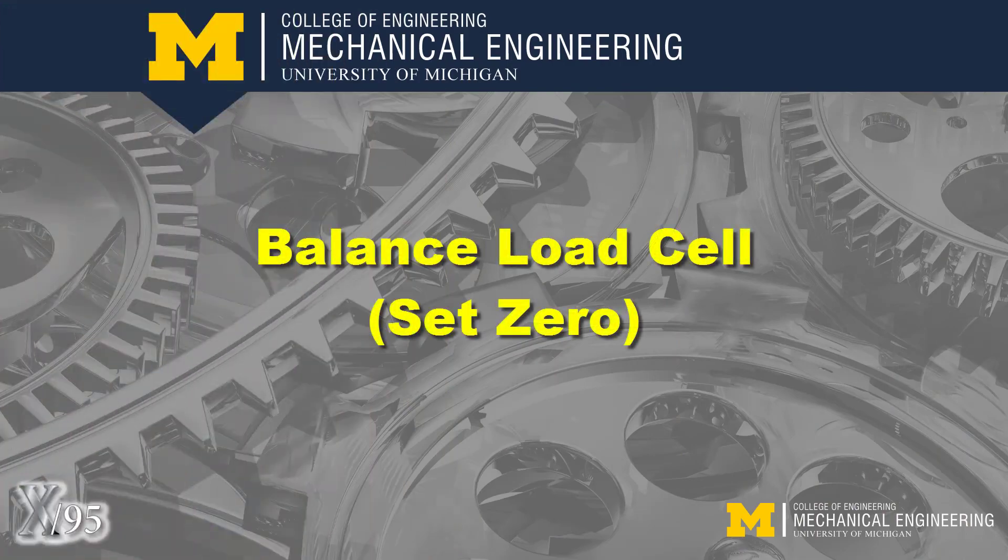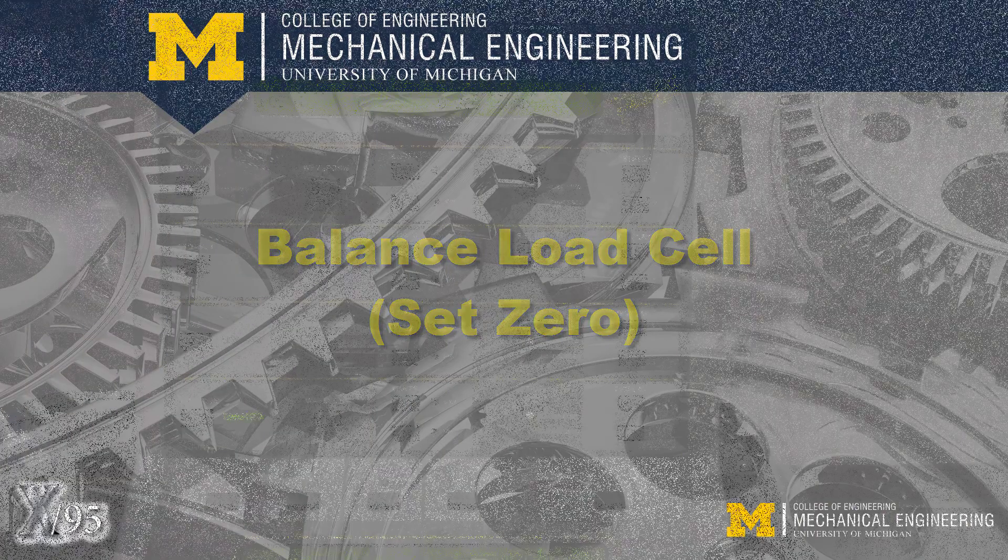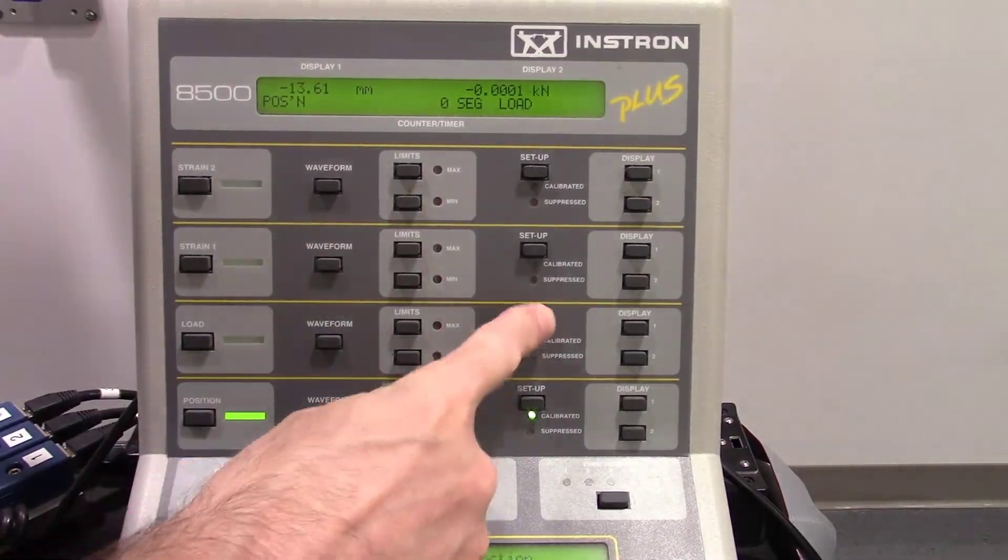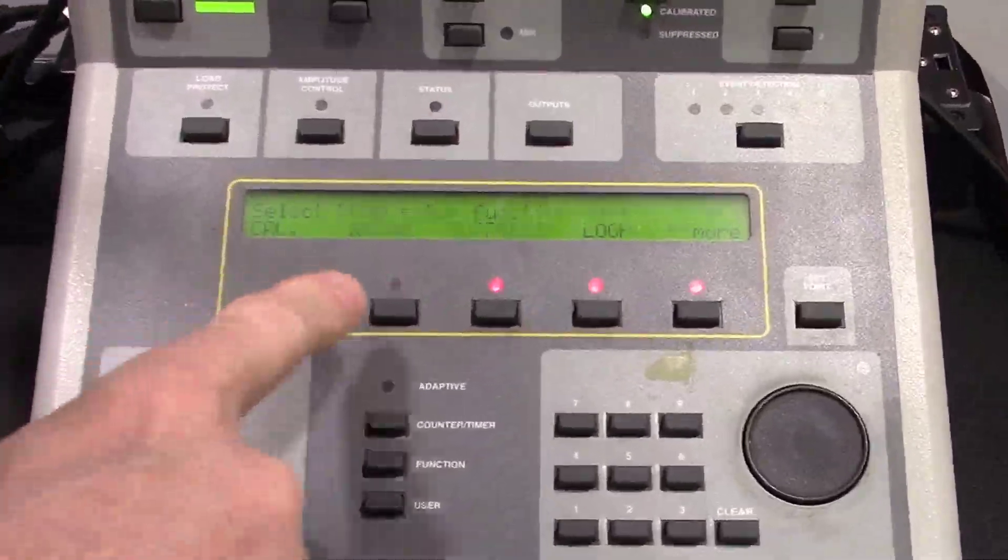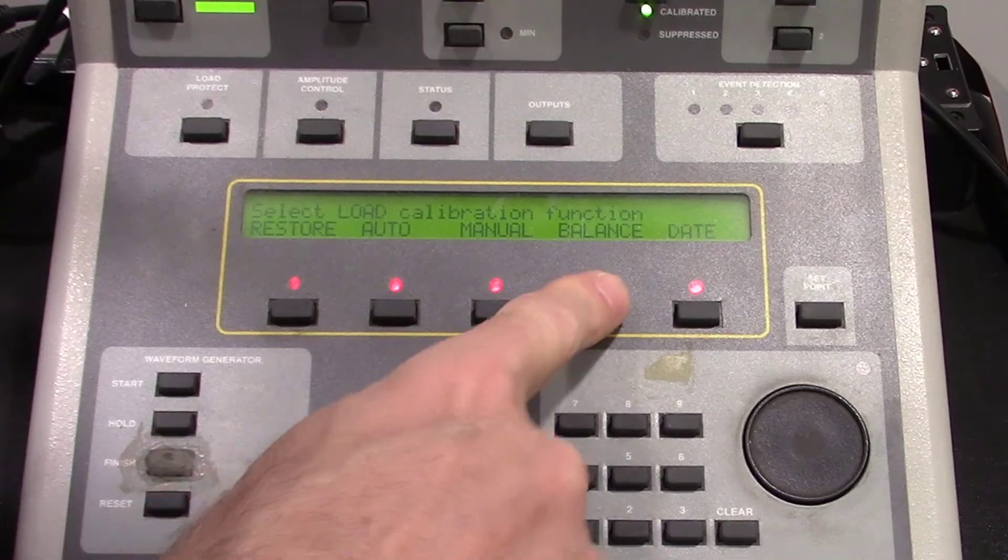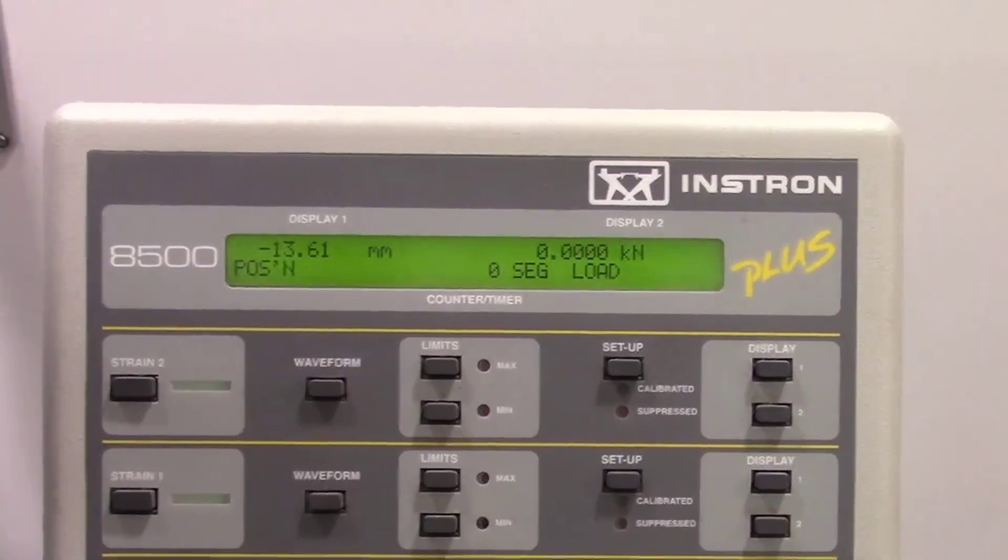Next, the load cell must be balanced, or zeroed. As before, press the SETUP button for the load channel. On the lower console, press the soft keys for CAL, CAL, and BALANCE. The load display should now read about zero.